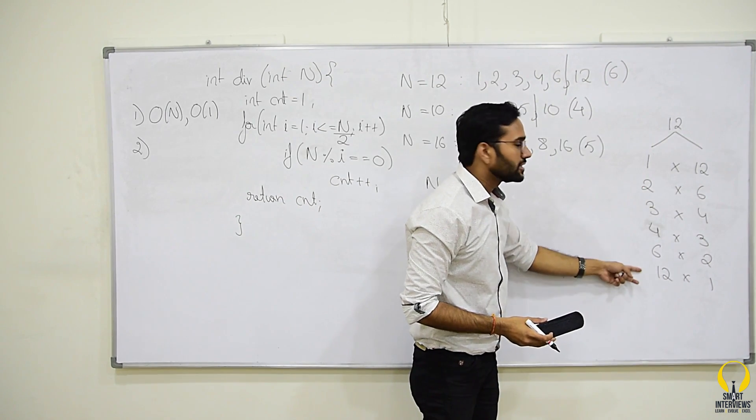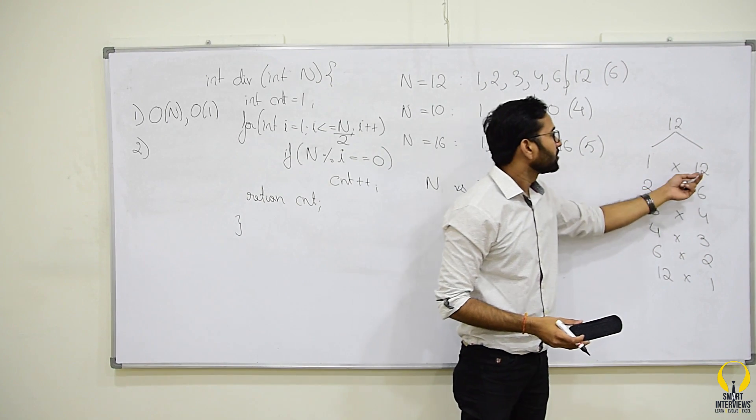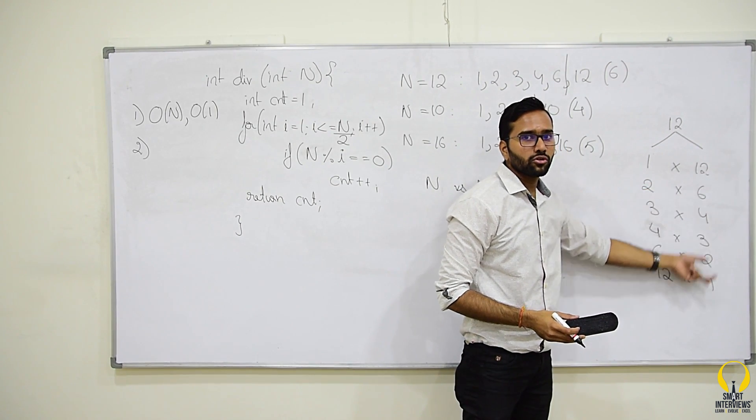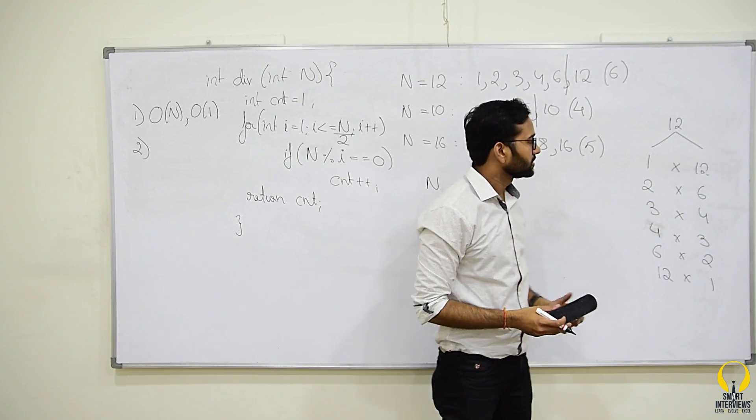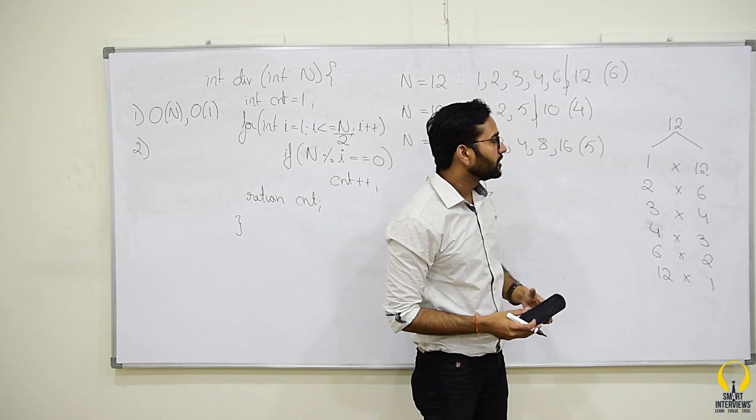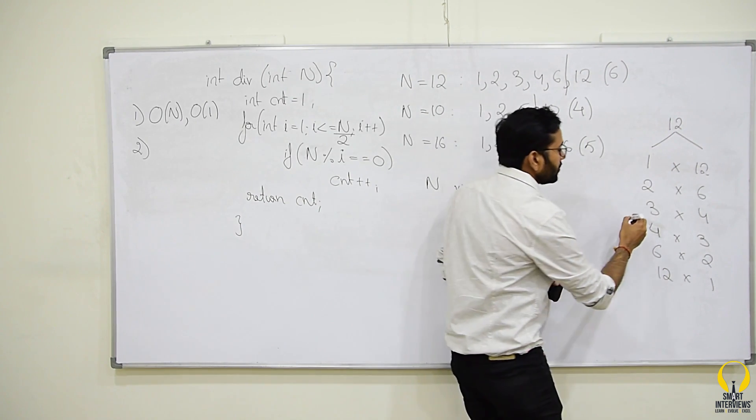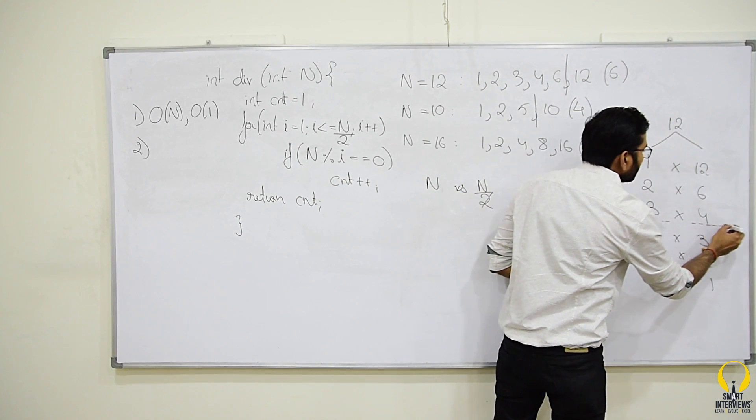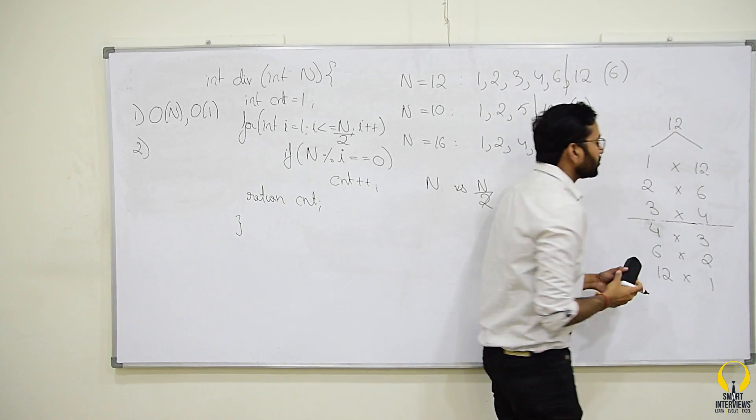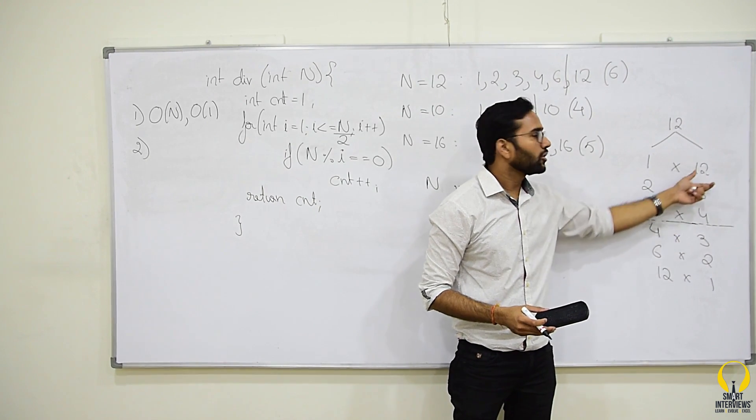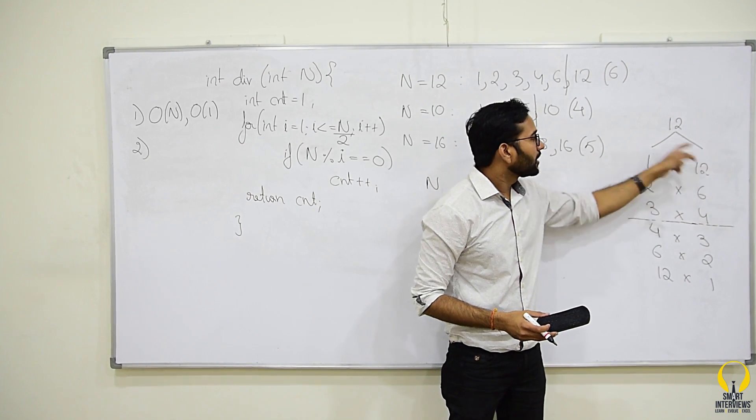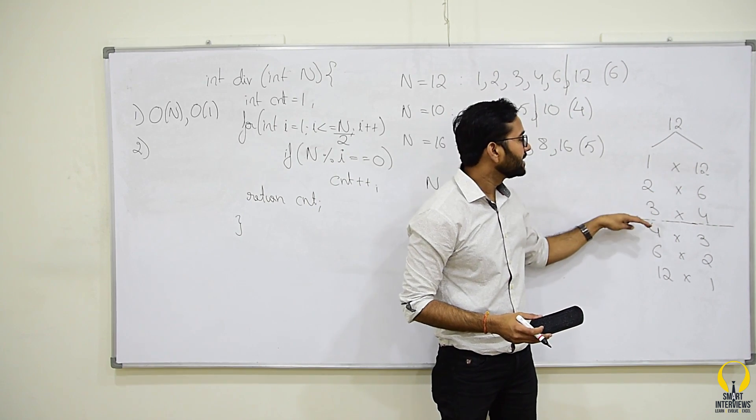So, we will list all the divisors and we will also list all the quotients. So, 1 into 12 is 12, 2 into 6 is 12 and so on. Now, if you observe this carefully, we need not go beyond this to say that 4 is a divisor or 6 is a divisor or 12 is divisor. We are able to find all the divisors till here itself.